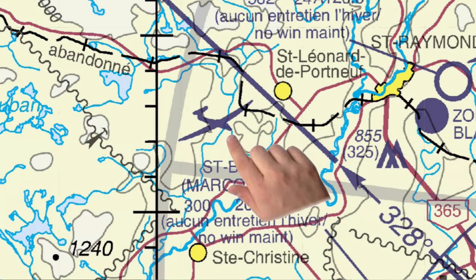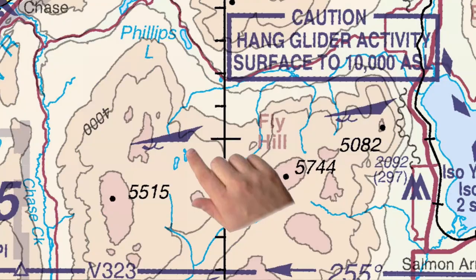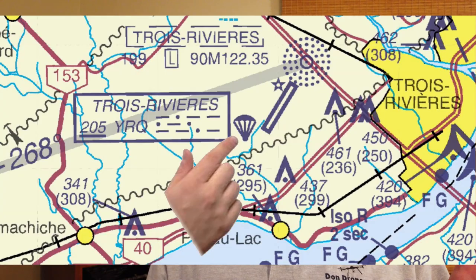Sometimes you'll see small symbols alerting you to special aviation activities in the area. A little airplane symbol indicates you may encounter aircraft training in the area. There are also more obvious symbols for soaring, ultralights, hang gliders, and parachuting.